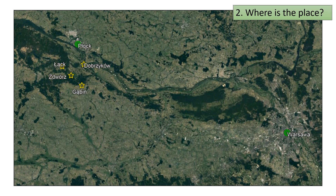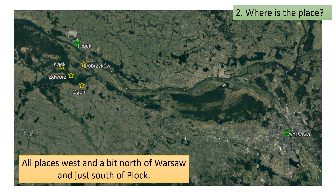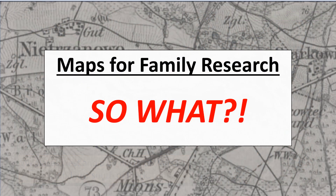To summarize the results of our search for Polivoda family places: all of the places are west of and a bit north of Warsaw and just south of Płock. You will need to know this for the next section of this work-along. Now that you have had some hands-on experience finding places, this is a good time to ask: so what? The whole purpose for using maps for family research is to reveal things about your ancestors that you might not otherwise know.